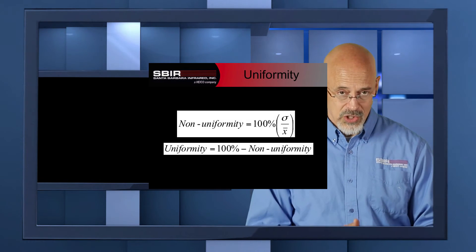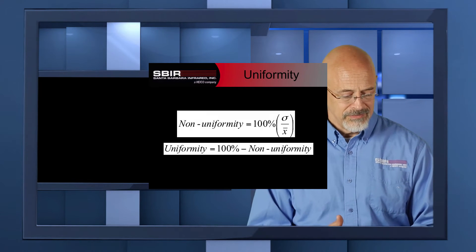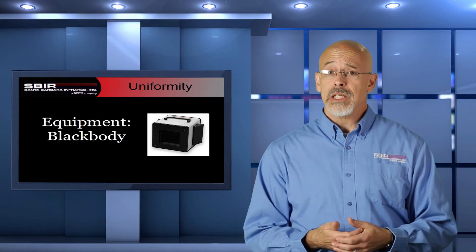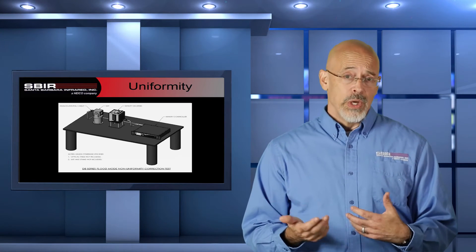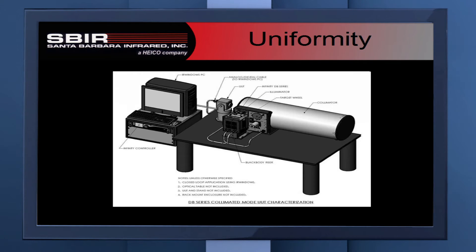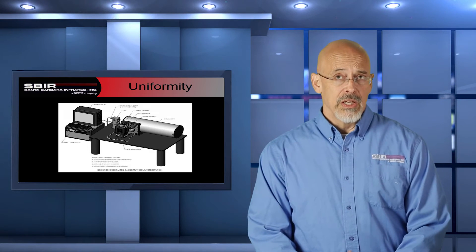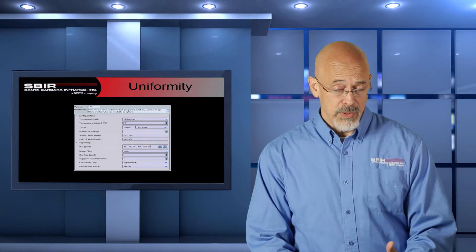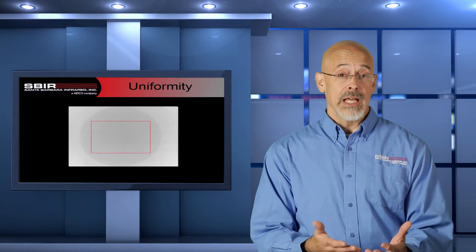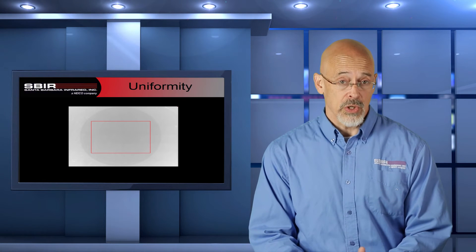So three different levels of ambiguity just to start off with. How do we run this test? We need to provide a uniform calibrated source — typically an extended area black body. We can present that to the camera in a flood form, bringing the body right up against the camera, or project it through a scene projection system into a portion of the image we can well characterize. We take one or multiple images, averaging them if we're doing an offset uniformity. For a response uniformity, we do that at two different temperatures.